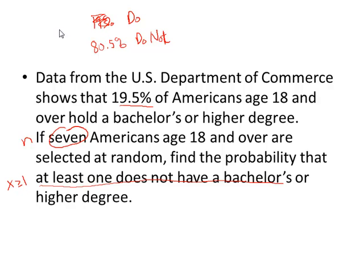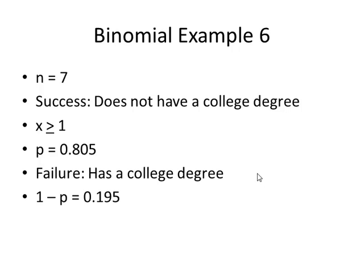So 80.5% do not. So p is going to be the 80.5% because that's the probability that someone does not have that degree. Students in my class, we know that as the switcheroo. All right, so n was seven, x was at least one, and p was 0.805.